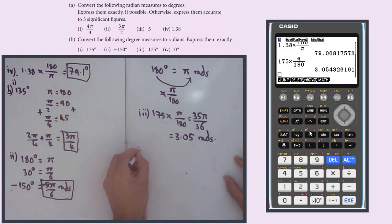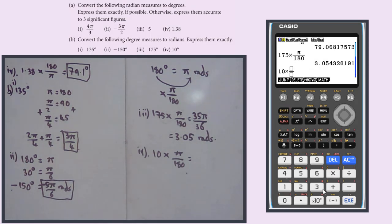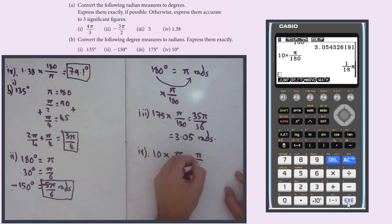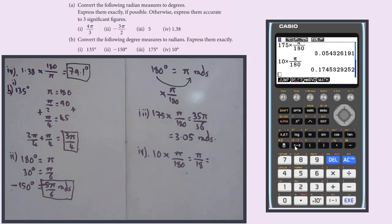Do the last one in the same manner, part 4. The angle is 10 degrees. 10, so we need to times it by π over 180. And that gives us π over 18. And it also gives us 0.175 radians.